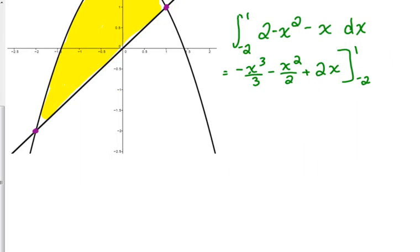I'm not going to be quite so lucky with our computations this time. Please be careful with these negatives. When you plug in 1, 1 cubed is 1, so that's negative 1 third. The negative does not get cubed, it's just the number. Minus 1 half plus 2.